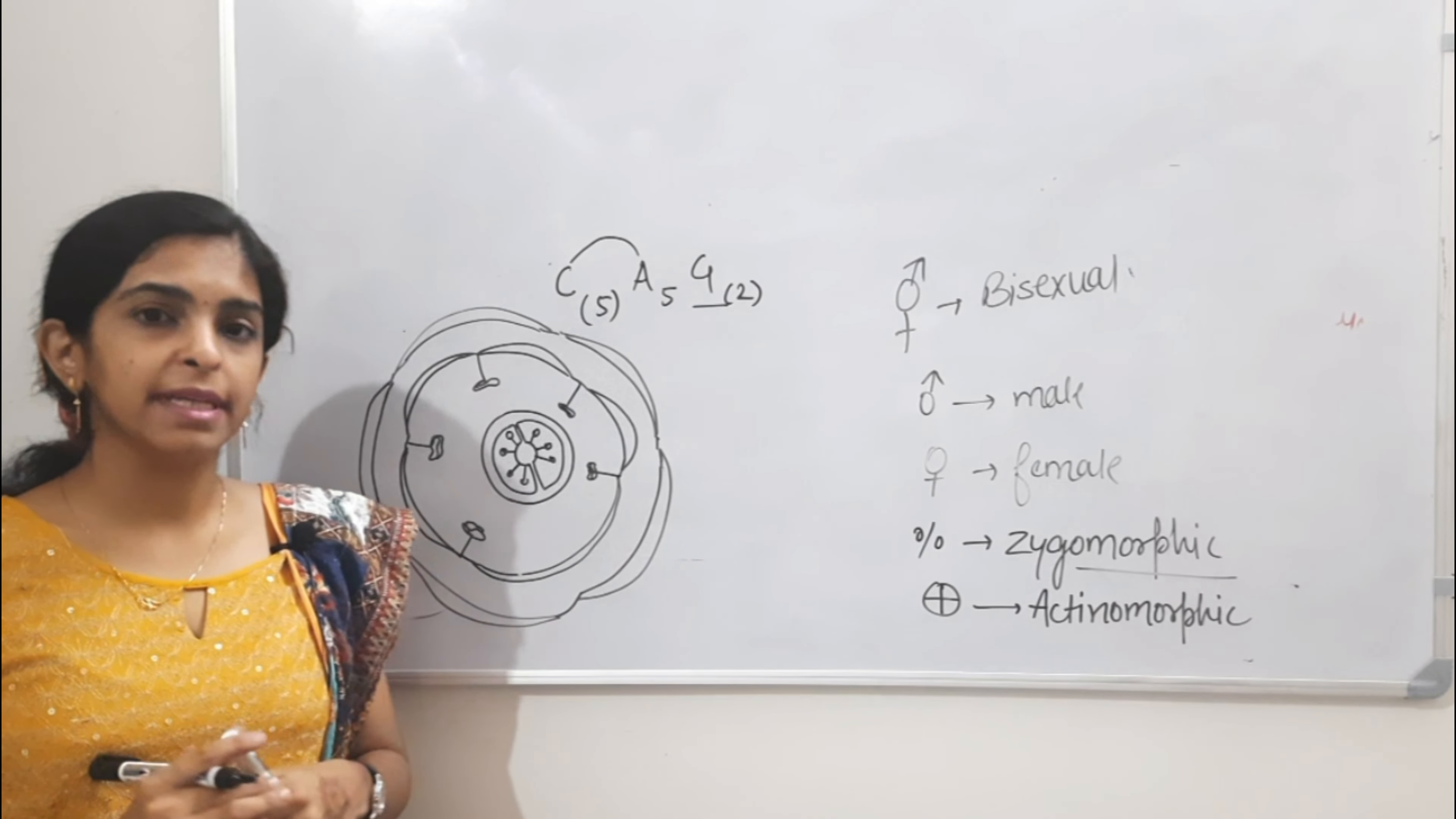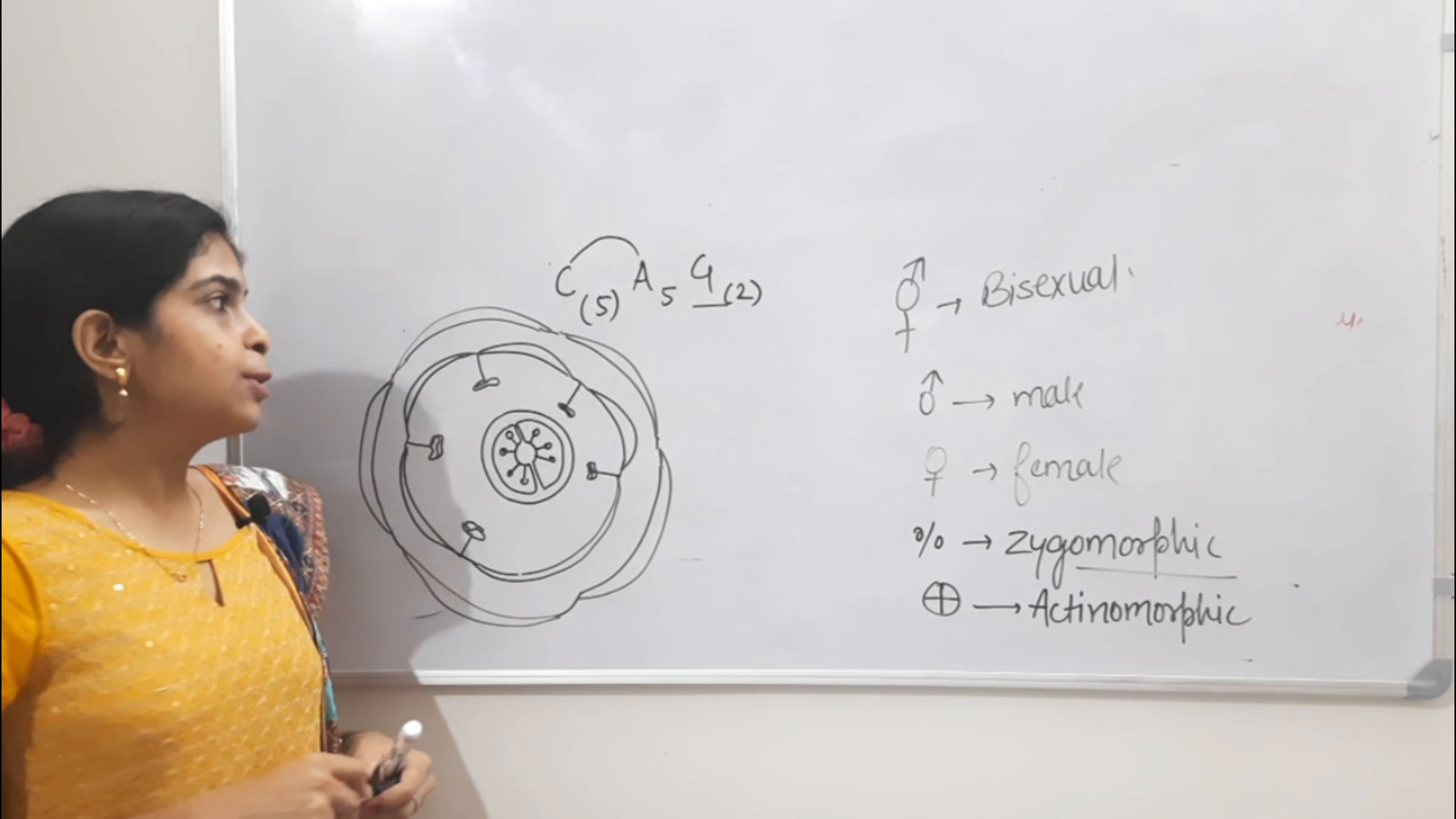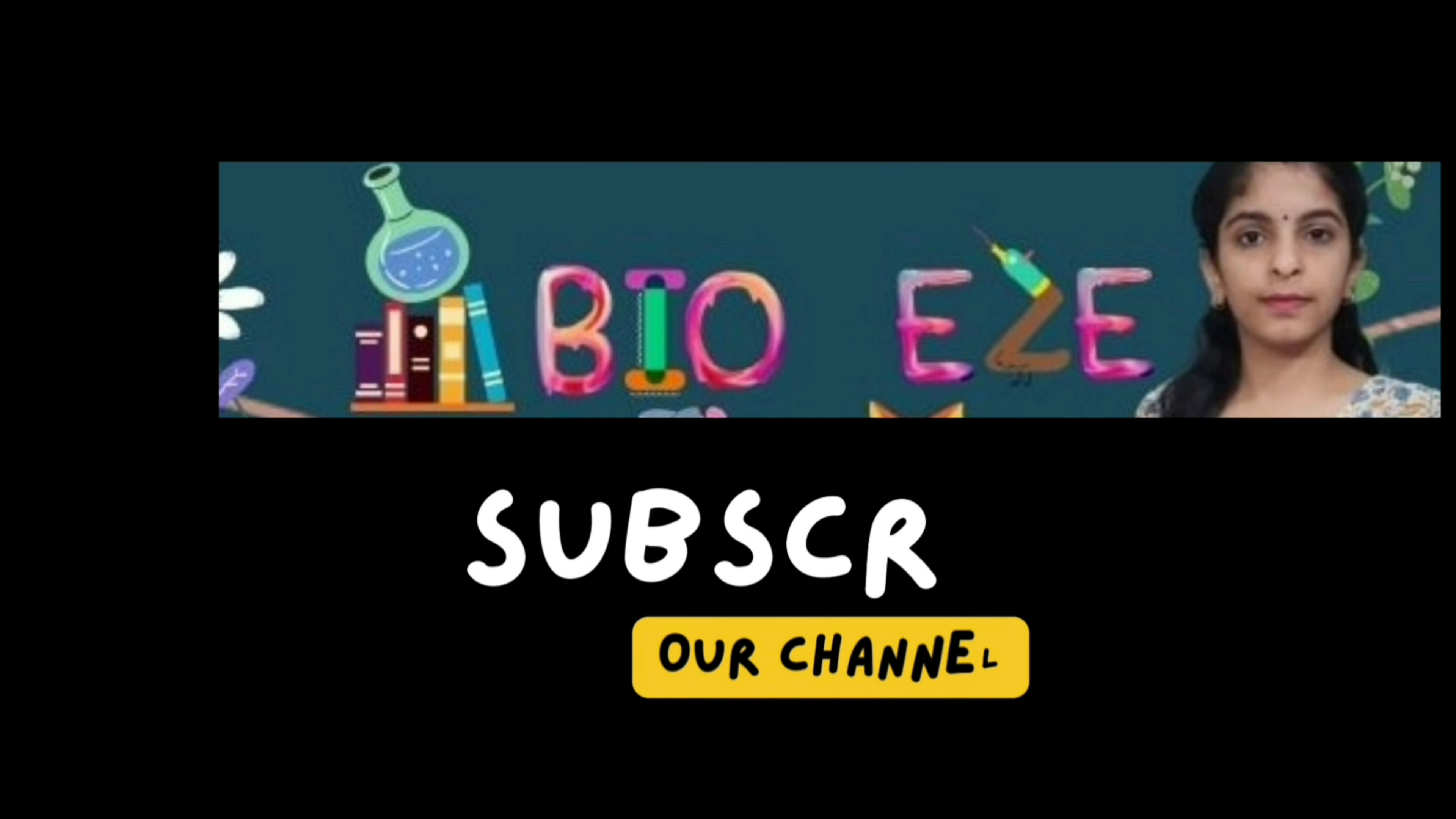This is Solanaceae floral diagram. Examples: Solanum tuberosum, Solanum nigrum, brinjal. What is economic importance? Used as vegetables and herbaceous plants used as herbs. This is the floral diagram and floral structures. If you're given a floral formula of any family, you can easily make a floral diagram. If you have one family, you can easily make it. So here is our morphology of flowering plants. Thank you.